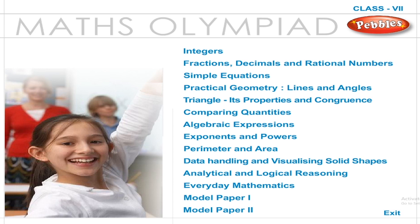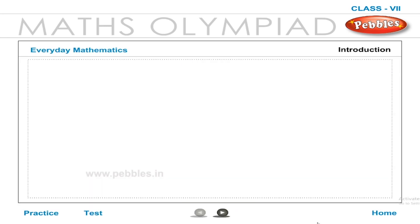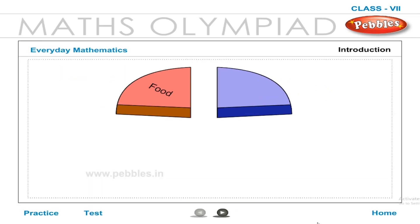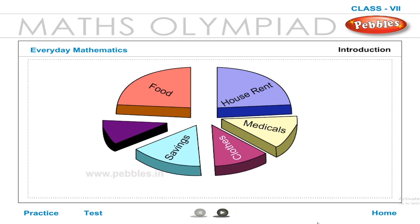Maths Olympiad Class 7 — Everyday Mathematics Introduction. The application of mathematics to business activities leads to the topic of Consumer Arithmetic.